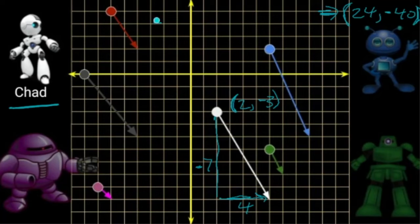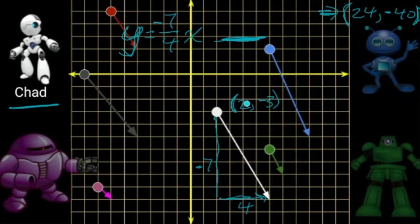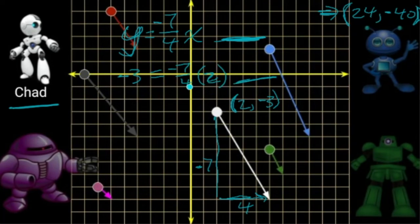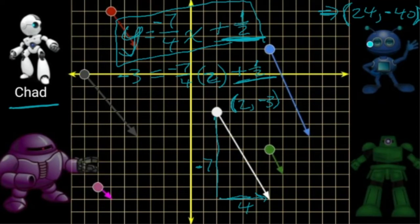So Chad's equation, negative 7 over 4 x equals y, and an adjustment. We want y to be negative 3 when x is 2. Negative 7 over 4 times 2 is negative 3 and a half, so we need to add one half to this. That's Chad's equation. Now, question, does this 24, negative 40 solve Chad's equation?